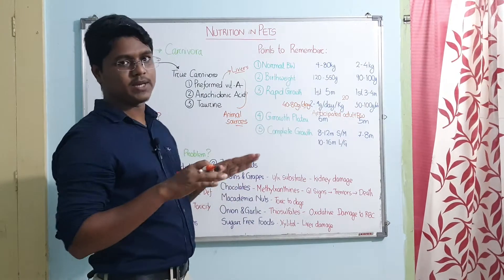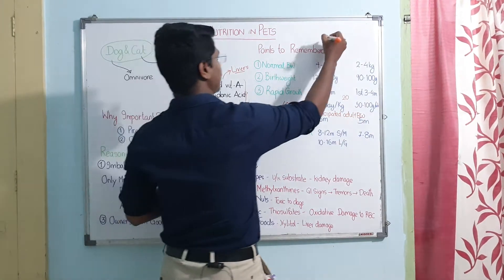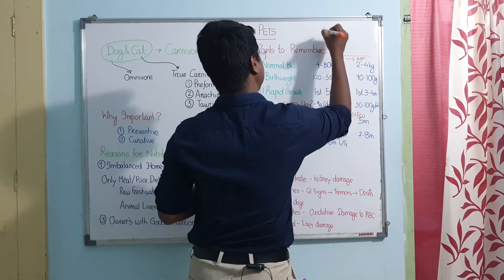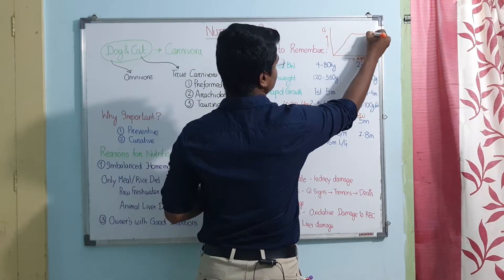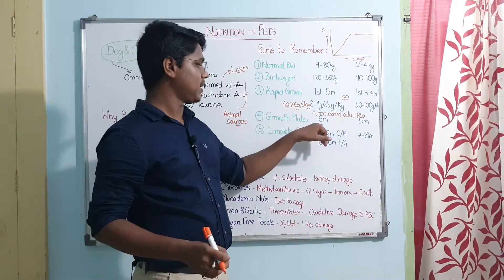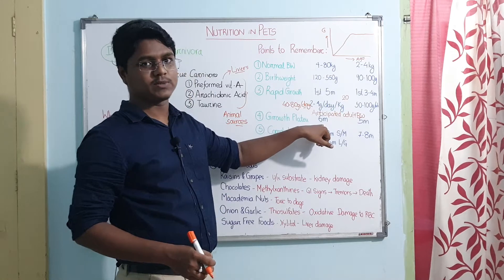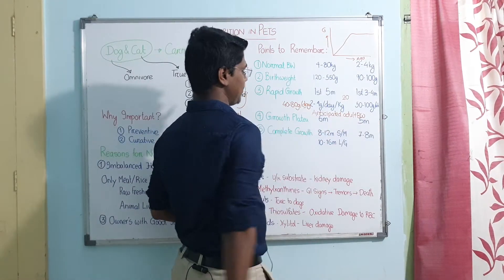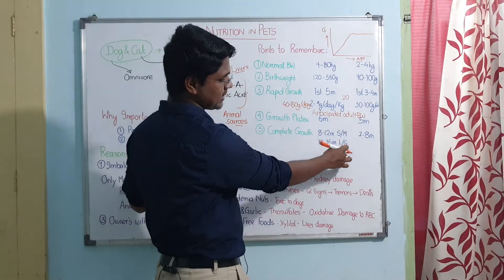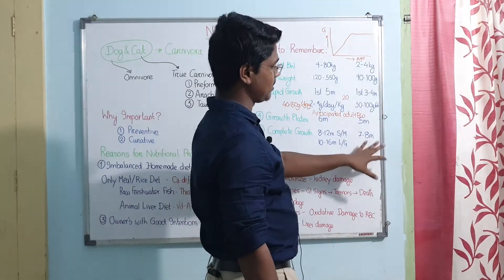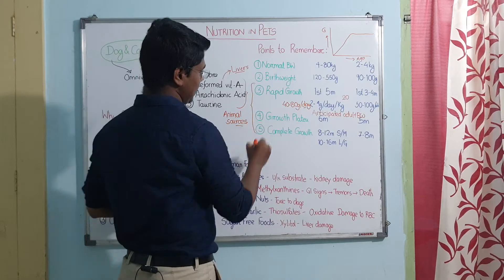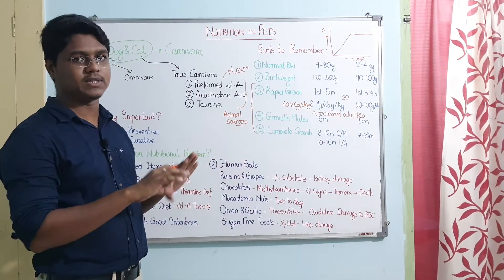The growth plateau is the phase of slightly moderate growth after the rapid phase. On the growth curve, after the first five months of rapid growth, from six months onward growth becomes a plateau. For dogs, complete growth occurs at 8 to 12 months for small and medium breeds, and 10 to 16 months for large and giant breeds. For cats, growth is completed by 7 to 8 months.